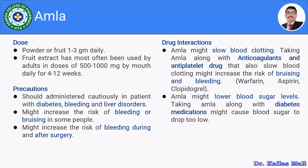There are certain precautions and warnings when consuming Amla-related products. It should be administered cautiously in patients with diabetes, bleeding disorders, and liver disorder. In the case of diabetes, it has a tendency to lower blood sugar levels. In bleeding cases, it might thin the blood, which could lead to bleeding. It should also be given cautiously if the patient is suffering from a liver disorder. It increases the risk of bleeding and bruising in some people, and Amla should be avoided before surgery due to the risk of bleeding.